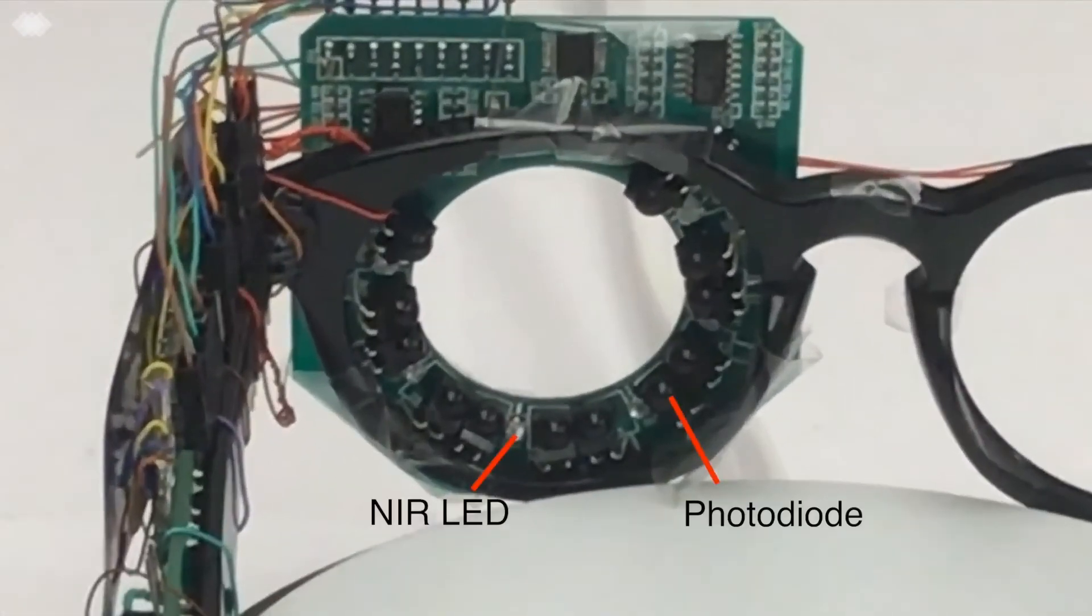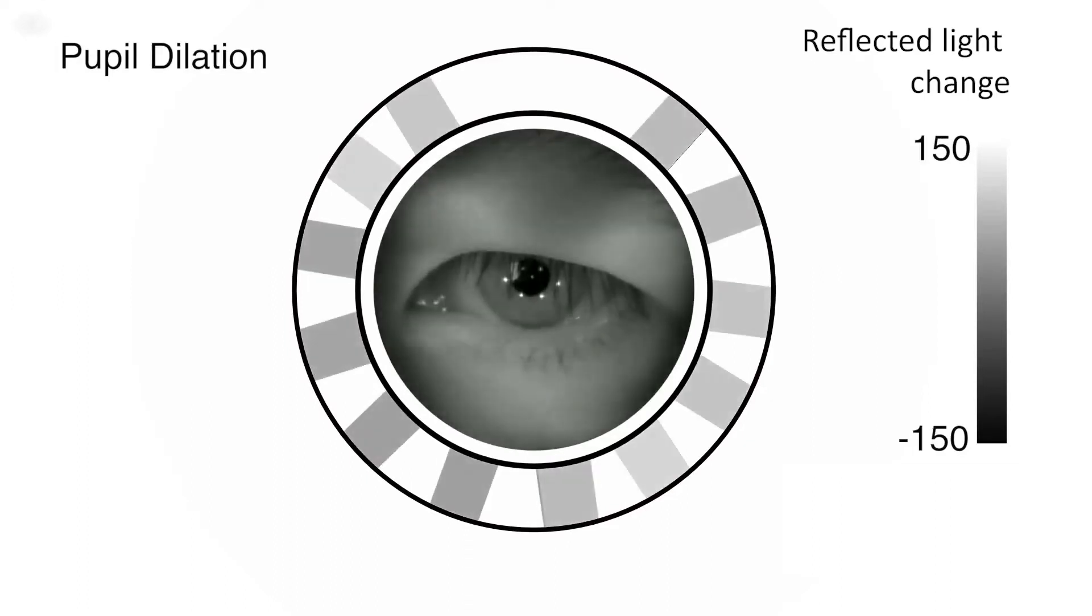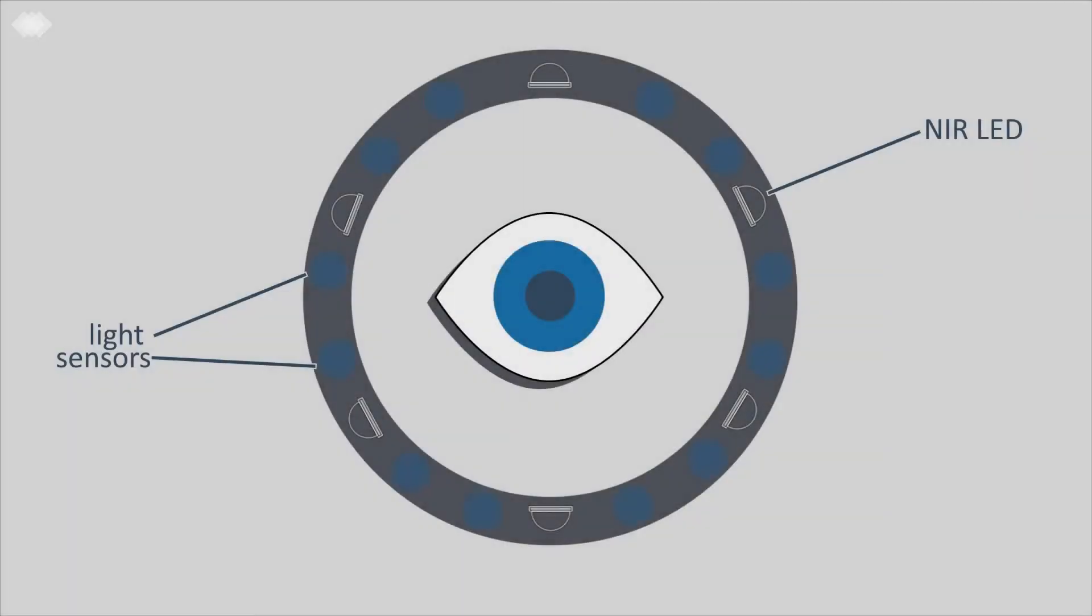It works by sensing how your eye reflects light using sensors around the eye. Because the pupil absorbs light, its movement and size variations change the reflected light that the sensors detect. Multiple near-infrared emitters sequentially shine a short, imperceptible light beam to the eye.